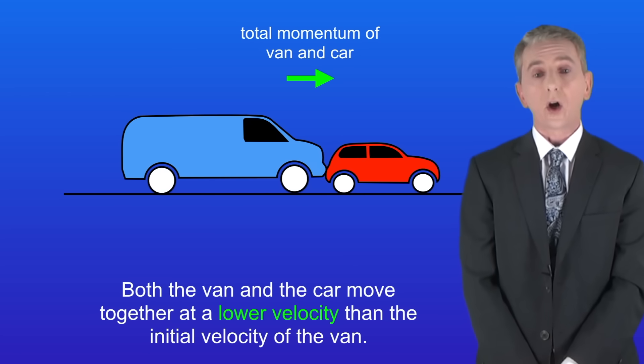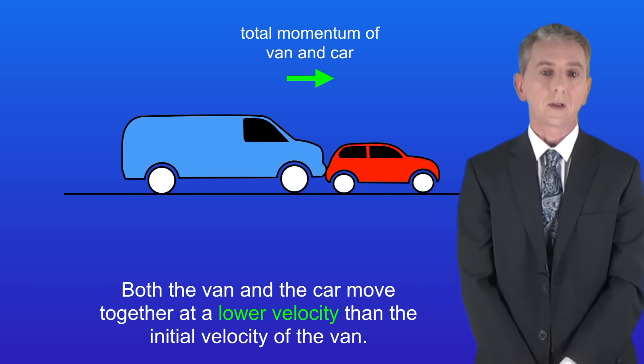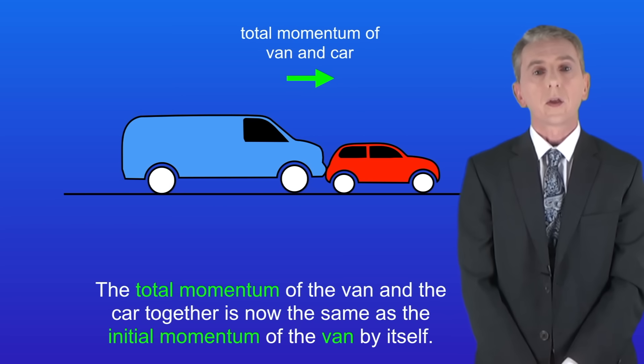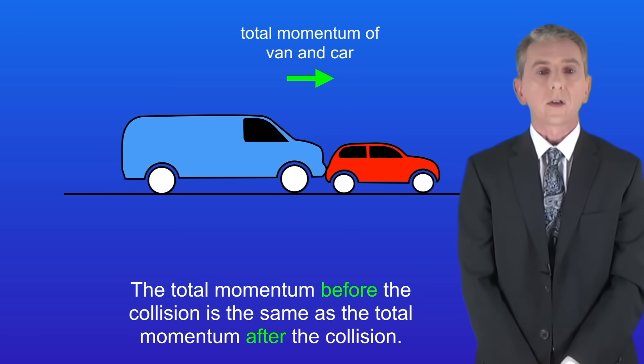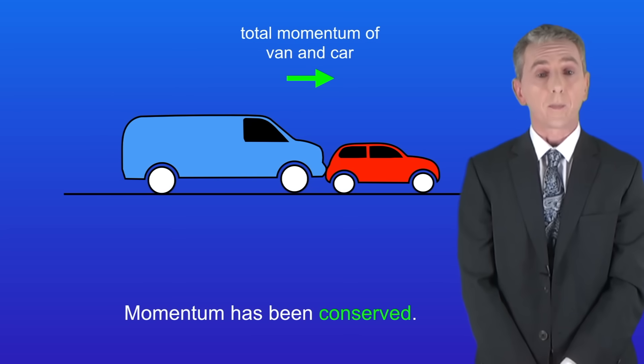Both the van and the car move together at a lower velocity than the initial velocity of the van. The total momentum of the van and the car together is now the same as the initial momentum of the van by itself. So as you can see the total momentum before the collision is the same as the total momentum after the collision. In other words momentum has been conserved.